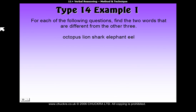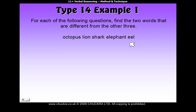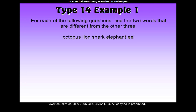In this example, we've been given five words: octopus, lion, shark, elephant, and eel, which as you can see are all animals. We need to find some other reason that three of those animals go together and two just don't fit into that same group.